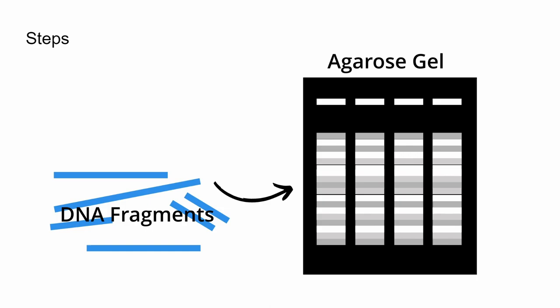We then transfer these fragments to an agarose gel to go through gel electrophoresis. This will separate the fragments by mass, and shorter fragments will travel farther while longer fragments will travel shorter.